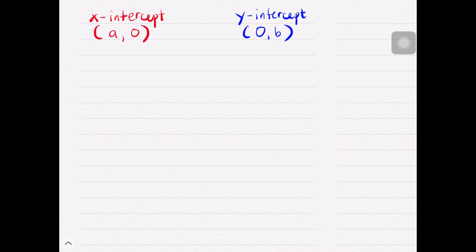When we say x-intercept, that would be a point that intercepts, cuts, or passes through the x-axis. That's why it has the form (a, 0) wherein we have a value for x-coordinate but our y-coordinate would be 0.